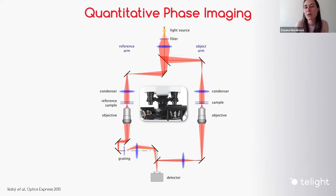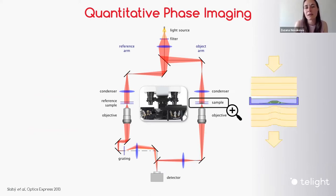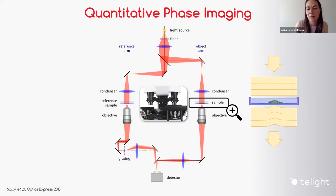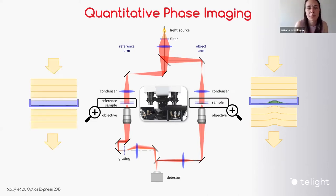In principle, what you have to do in this technology is to split the beam that comes from the light source in your microscope into two arms. One arm is called the object arm, the second one is called the reference arm. The light that passes through the cell is slightly delayed — there is a phase shift. In the reference arm, you place just a reference sample to compensate for some effects, but there is no phase shift.